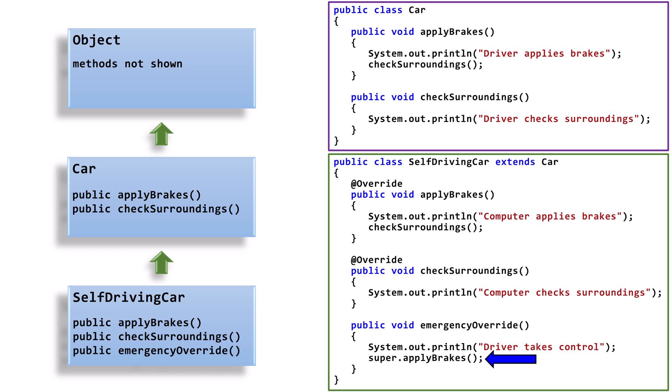Inside the emergencyOverride method, there is a call to super.applyBrakes. This is instructing Java to call the applyBrakes method from the super class Car, even if there is an overridden version of the method in the Self-Driving Car class.